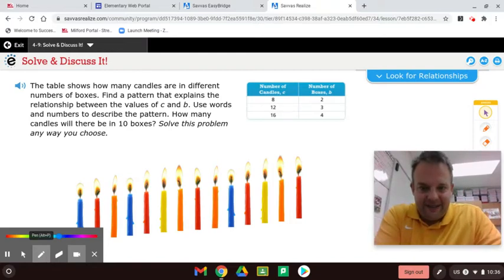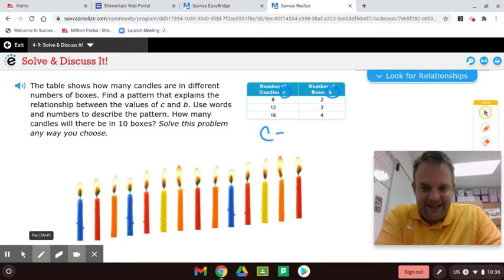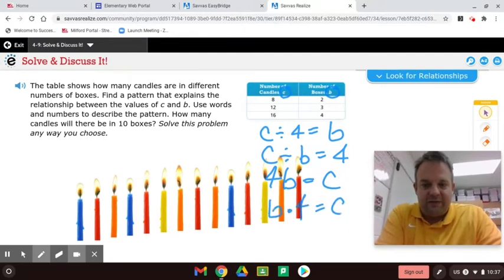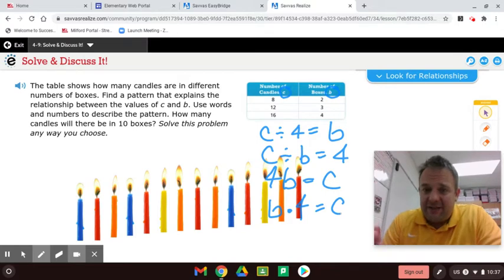We're going to write an equation: C divided by 4 equals B. Now you could also do C divided by B equals 4, and you could also go 4 times B equals C and B times 4 equals C. Remember these fact families that you've been learning since first grade, and we apply it right here to these algebra equations.